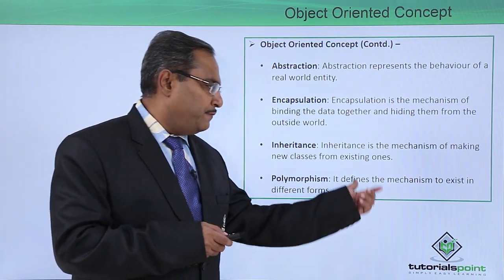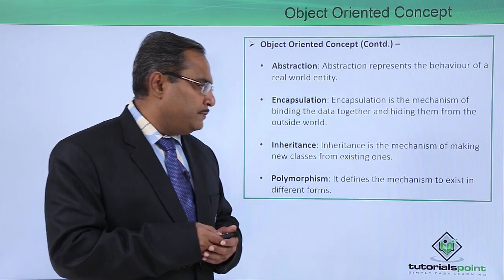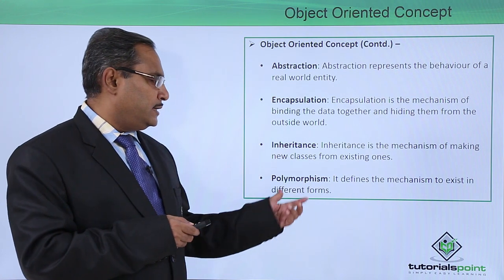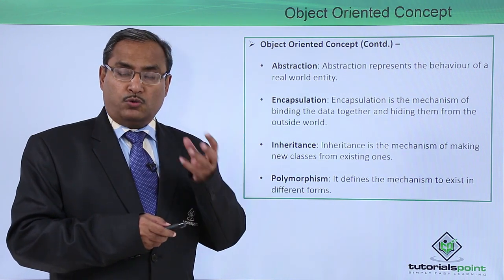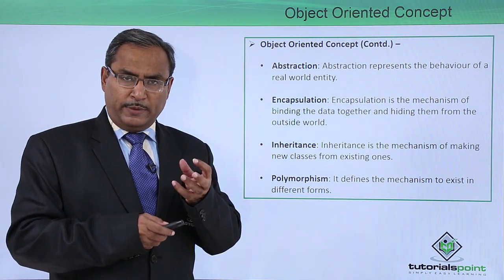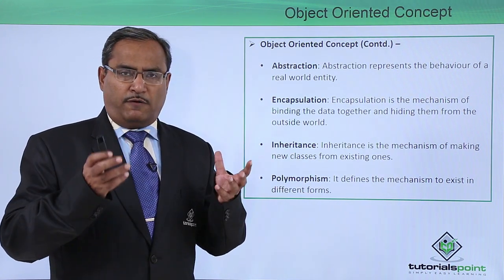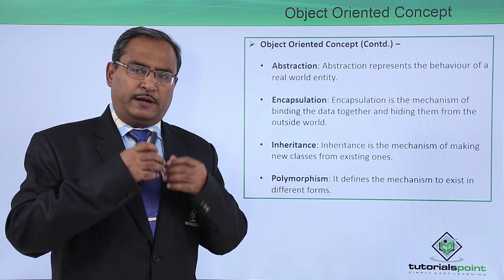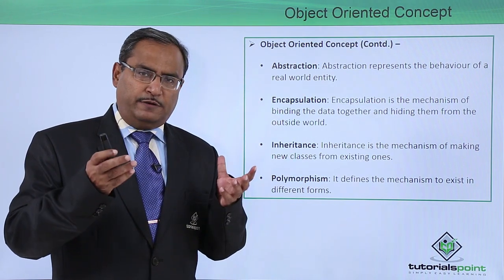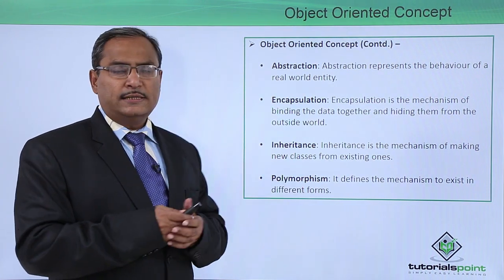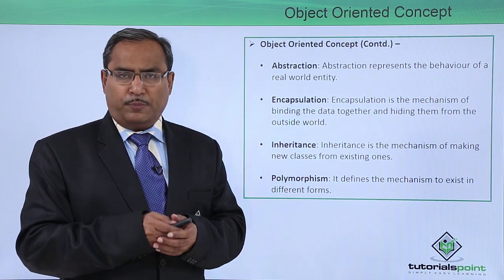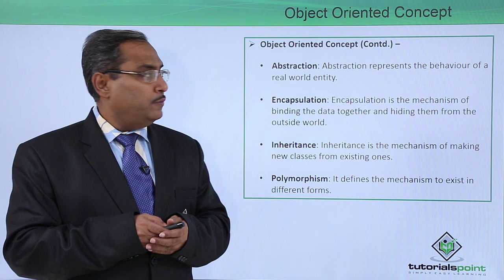Polymorphism defines the mechanism to exist in different forms. One thing existing in different representations and different forms is said to have the property known as polymorphism.